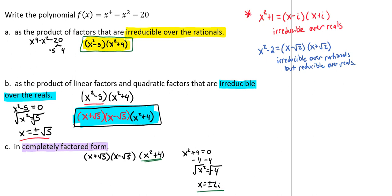From there, we'll replace our x^2 + 4 with the ±2i, which gives us (x + √5)(x - √5)(x + 2i)(x - 2i). And this would be considered completely factored form because nothing else can be broken down at all.